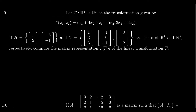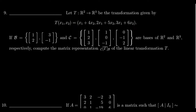We're given a linear transformation. Let T be a map from R2 to R3, given by the formula T of (x1, x2) = (x1 + 4x2, 2x1 + 5x2, 3x1 + 6x2). We're also given a basis for R2,